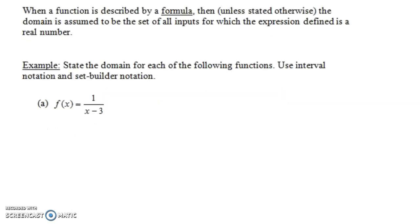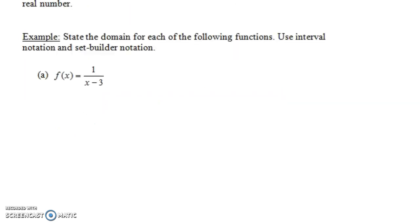Let's look at a couple examples. State the domain for each of the following functions and use interval notation and also set builder notation. I'll explain what that means in a second. Our first function is f(x) equals 1 over x minus 3. Notice we can put in any number for x that we want with one exception. The one exception is 3.